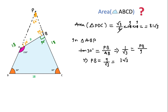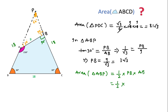Now we can find the area of right-angle triangle PAB. Area = ½ × base × height = ½ × PA × AB = ½ × 3√3 × 9 = 27√3/2 square units.